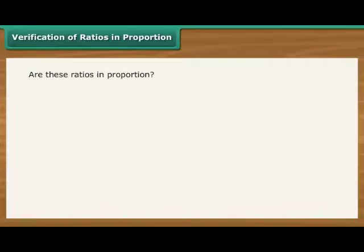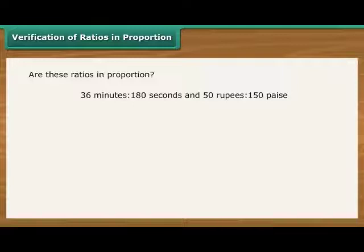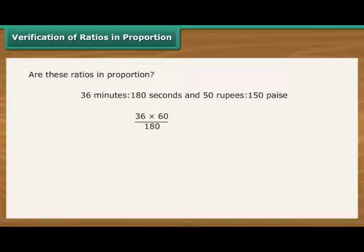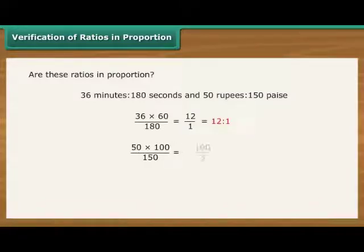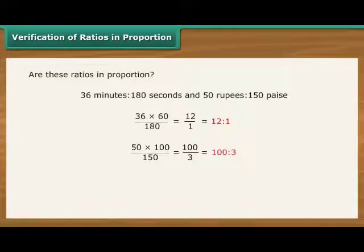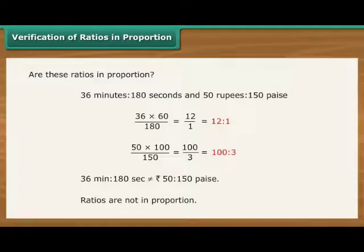Consider two more ratios: 36 minutes is to 180 seconds and Rs. 50 is to 150 paise. 36 minutes by 180 seconds is the same as 36 × 60 seconds divided by 180 seconds, which equals 12 is to 1. Rs. 50 divided by 150 paise is the same as 5000 paise divided by 150 paise, which equals 100 is to 3. Therefore, 36 minutes is to 180 seconds is not equal to Rs. 50 is to 150 paise. The ratios are not in proportion.